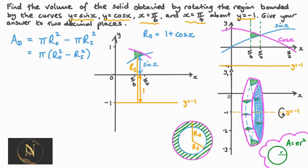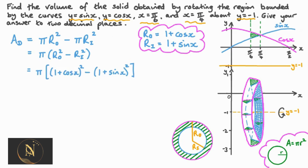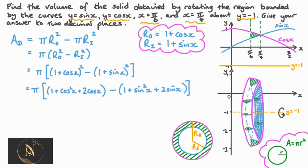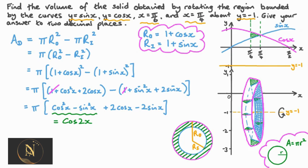Similarly, the inner radius r_i is the distance from the centre of rotation to y equals 0, so that's 1 plus sine x. The area of a cross sectional disk is therefore pi multiplied by (1 plus cosine x) squared minus (1 plus sine x) squared. Expanding, the 1's disappear and we have pi multiplied by cos squared x minus sine squared x plus 2 cos x minus 2 sine x.